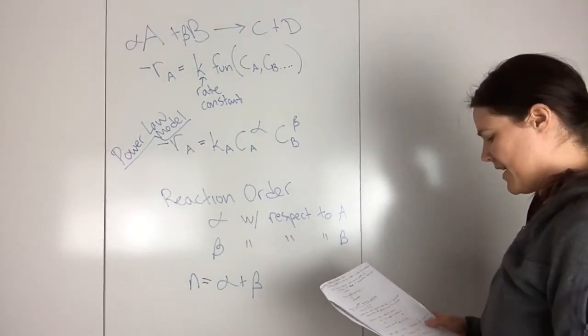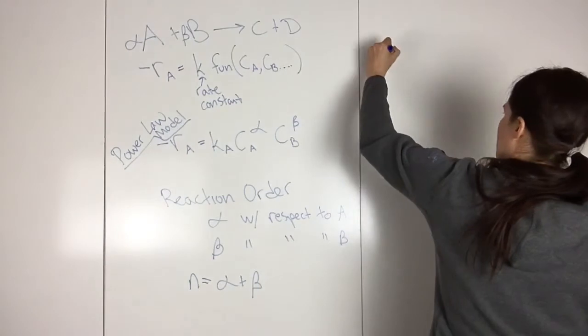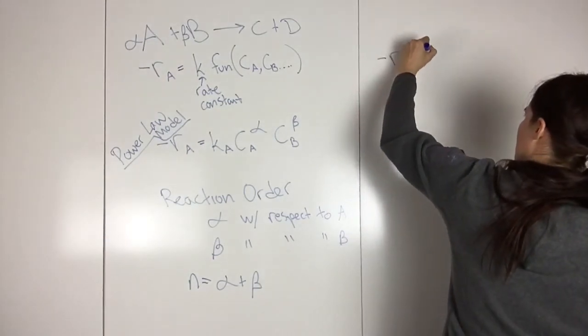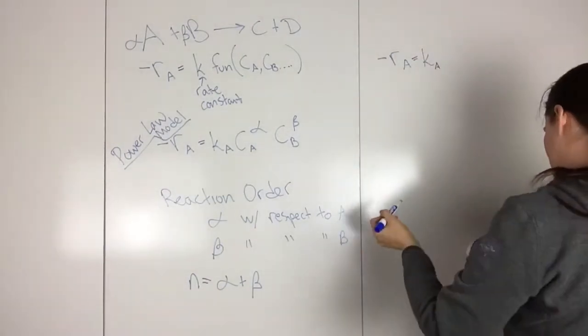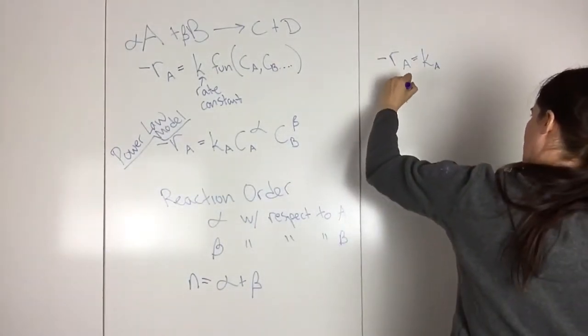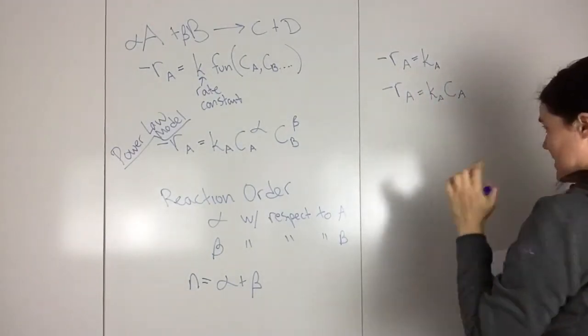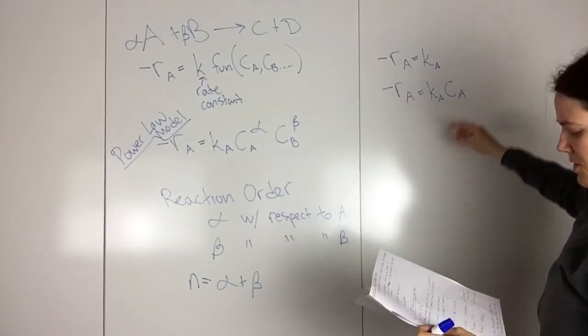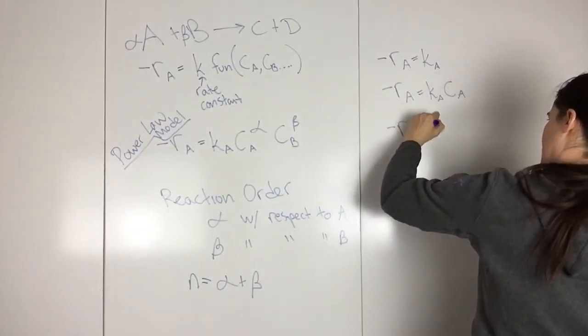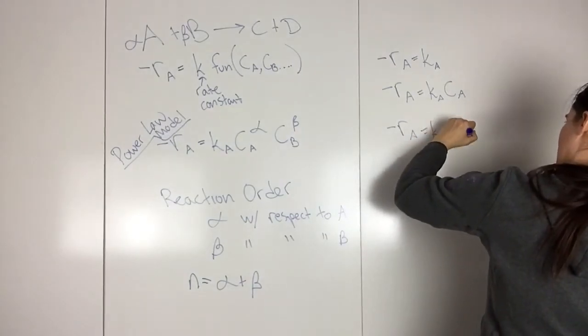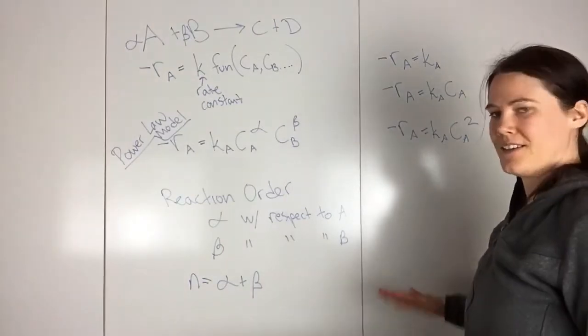So for instance, if you have a zero order reaction would look like this. And a first order reaction would look like this. So this would be one. A second order reaction would look like this.